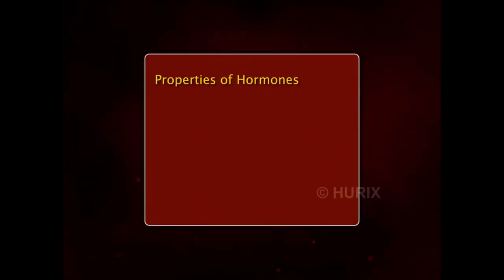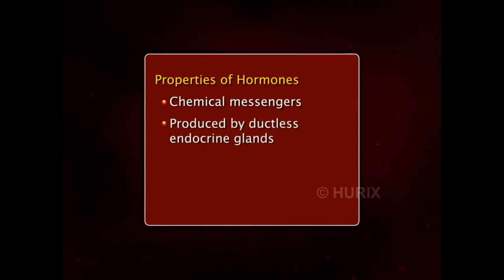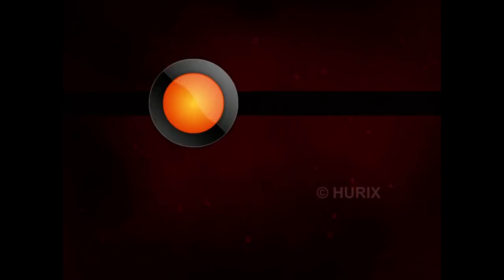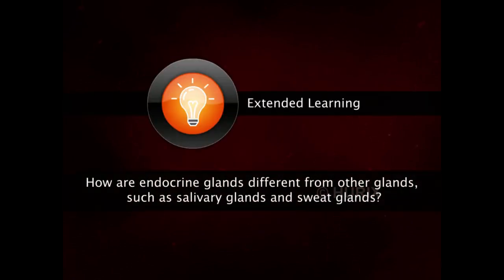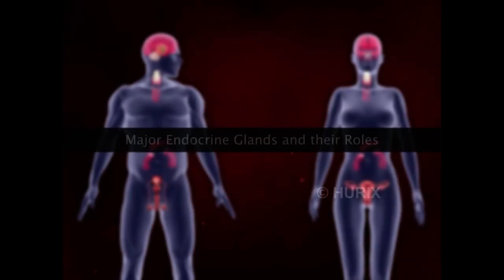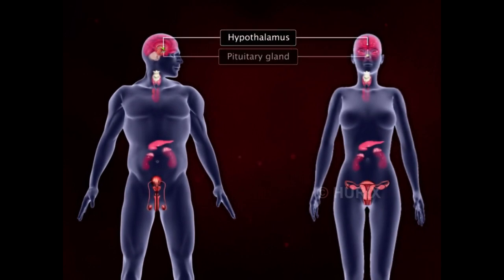Let's summarize the properties of hormones. Hormones are the chemical messengers of our body. They are produced by ductless endocrine glands, poured directly into the blood, and they act on specific target organs.